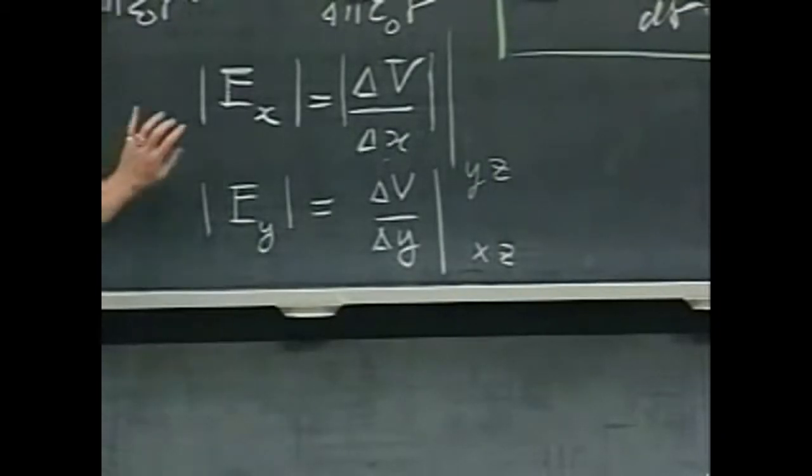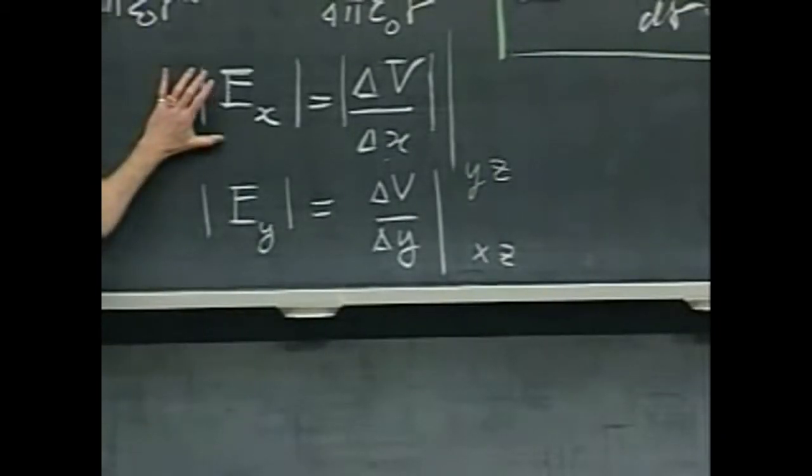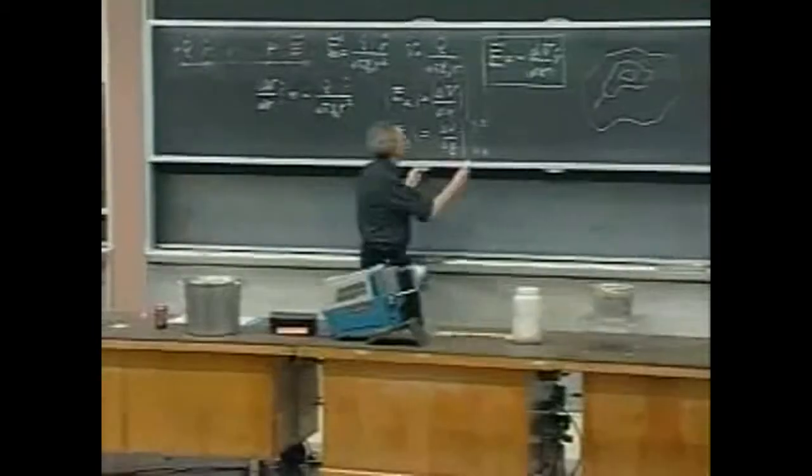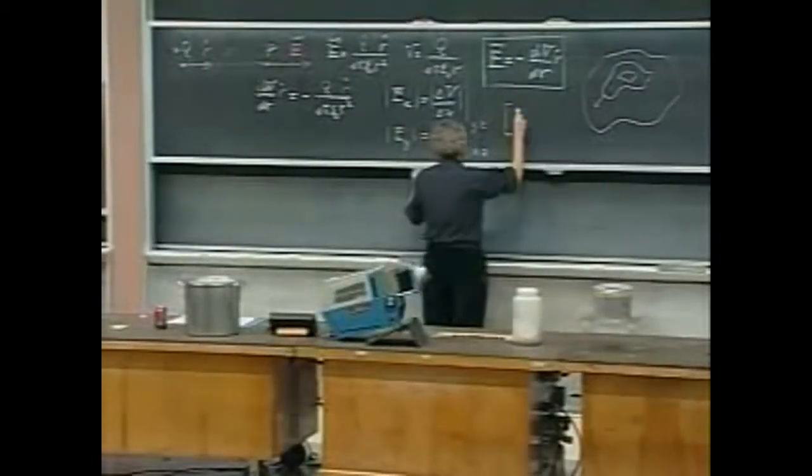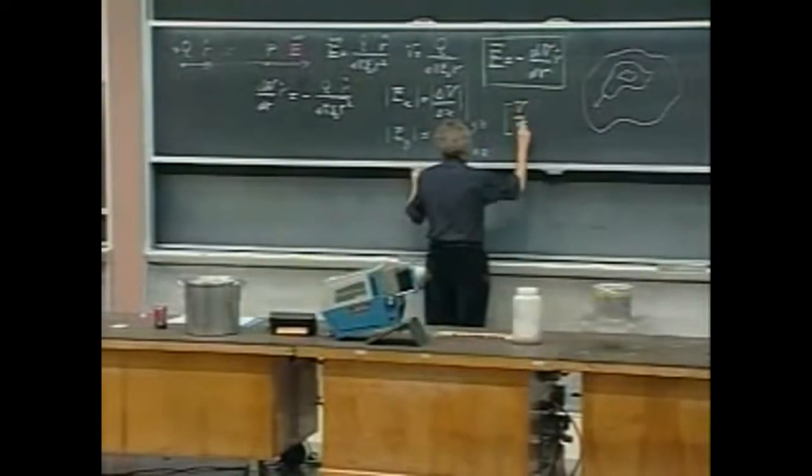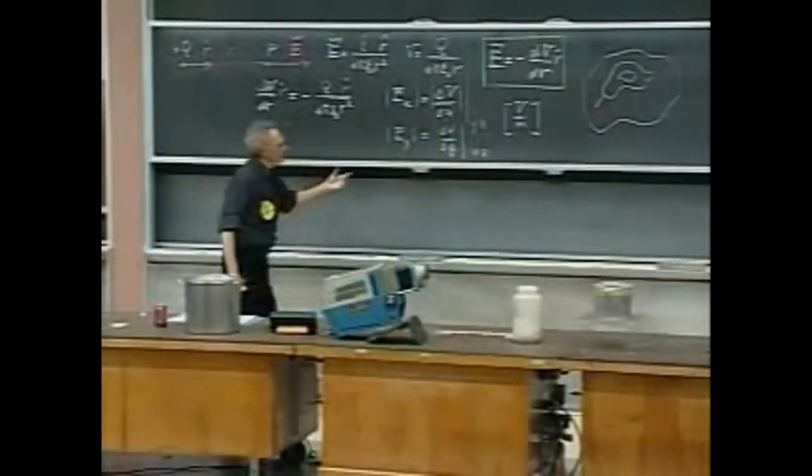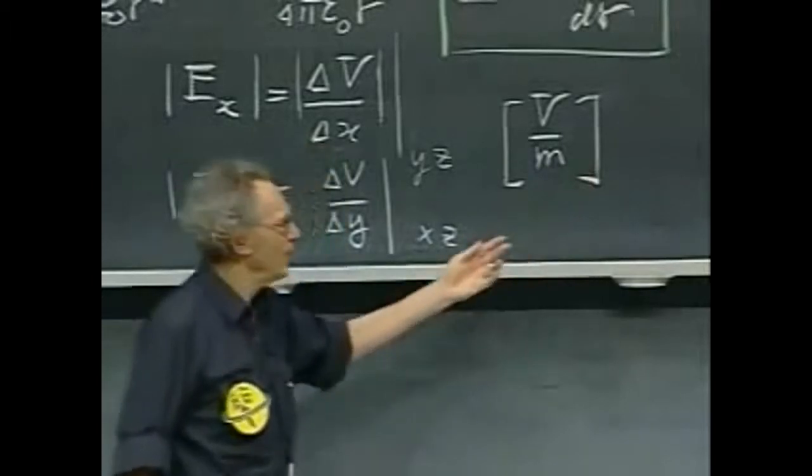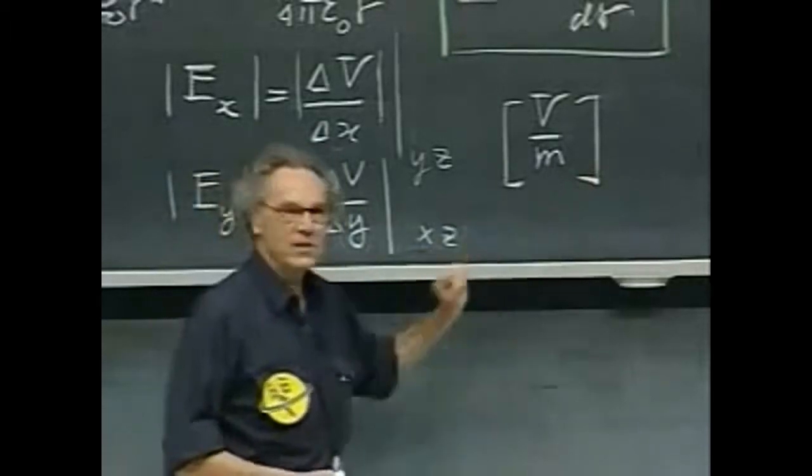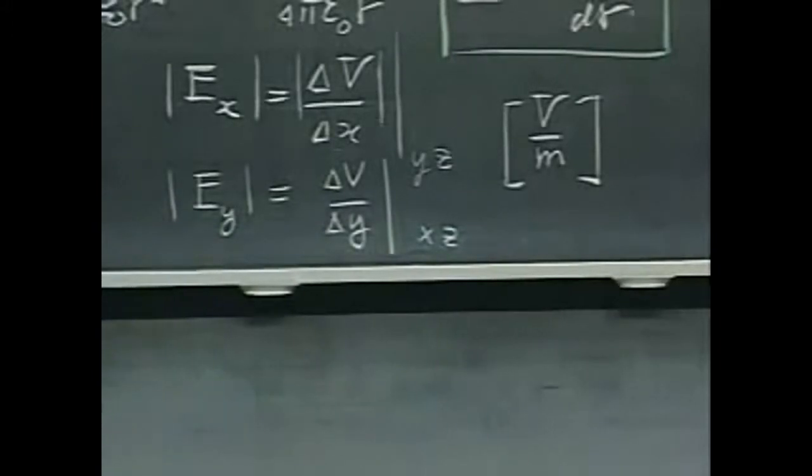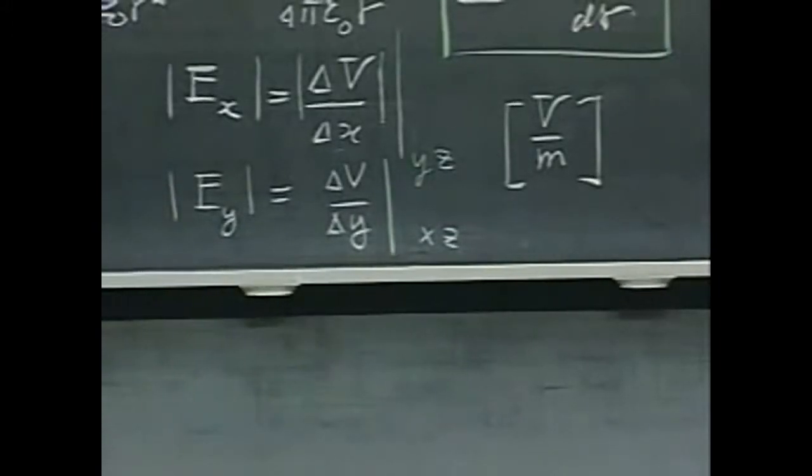Earlier, we wrote down for E as a unit newtons per coulomb. From now on, we will almost always write down for the unit of electric field volts per meter. It is exactly the same thing as newtons per coulomb. But this gives you a little bit more insight. You make a little sidestep in meters and you measure how much the potential changes. It's volts per meter. It is a potential change over a distance.